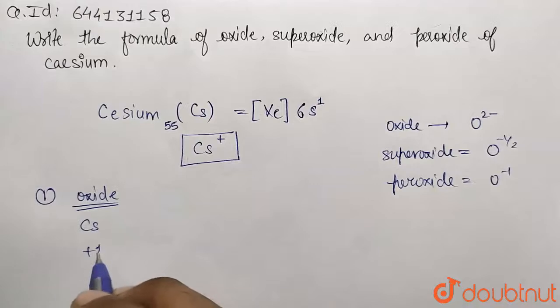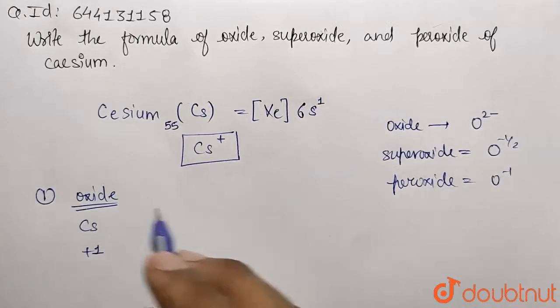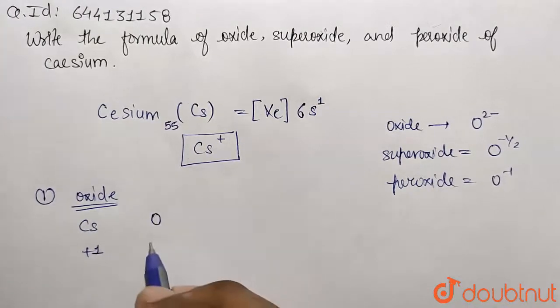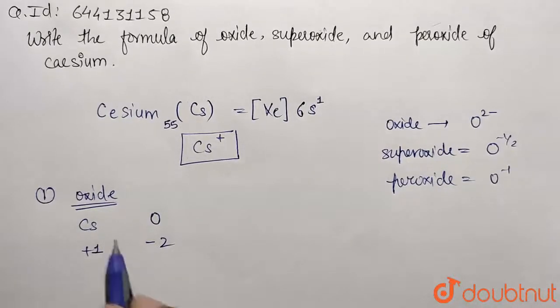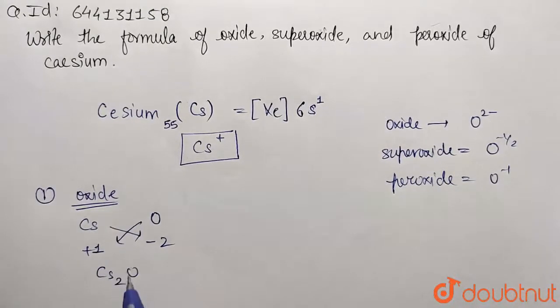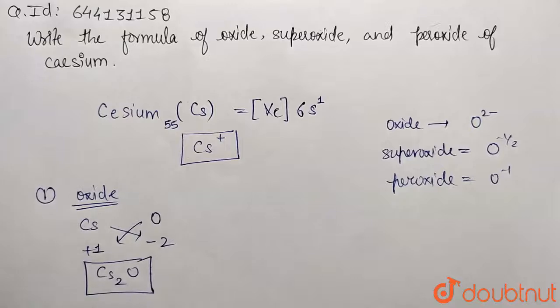First, we are writing the formula for oxide. On one side is cesium showing +1 state, on the other side is oxide with a charge of -2, which we have already seen. So the compound will be Cs₂O - this is cesium oxide.